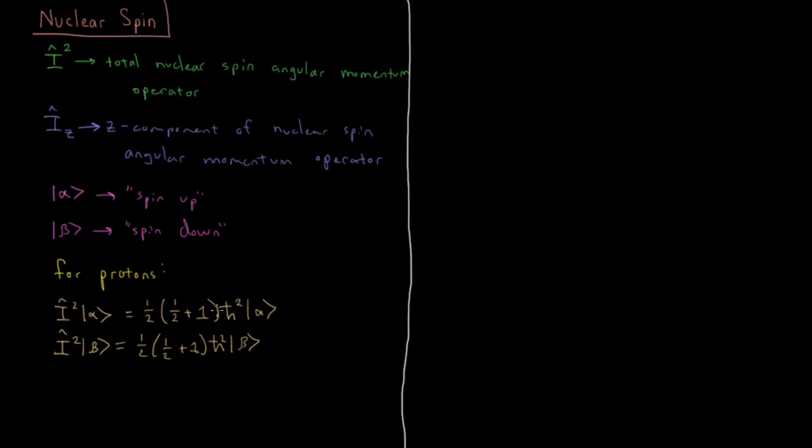Where does the difference come in? The difference comes when we're talking about the IZ operator. IZ acting on spin up gives us 1/2 h bar times spin up, and IZ acting on beta gives minus 1/2 h bar beta.